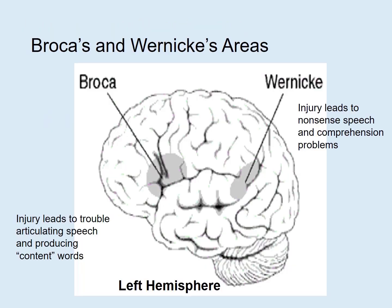Here we see the locations of Broca's area and Wernicke's area in the left hemisphere. Broca found that individuals with damage to the left frontal region had trouble producing and articulating speech, as well as coming up with content words. Wernicke found that damage further back — in the posterior area of the left hemisphere — led to nonsense speech and comprehension problems.